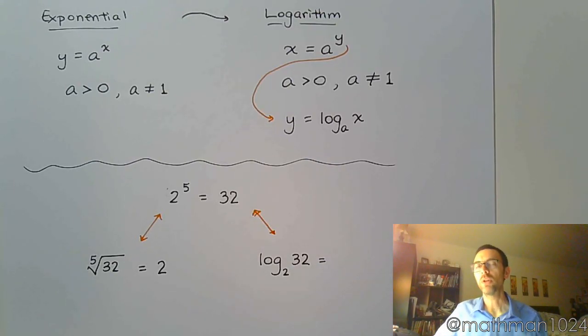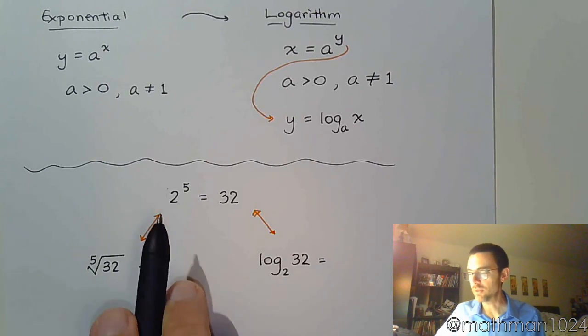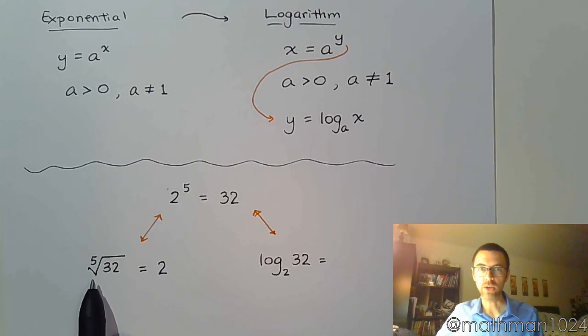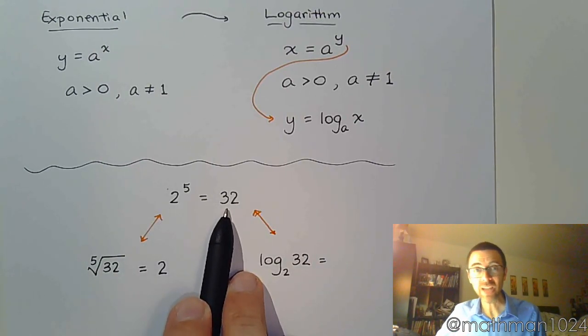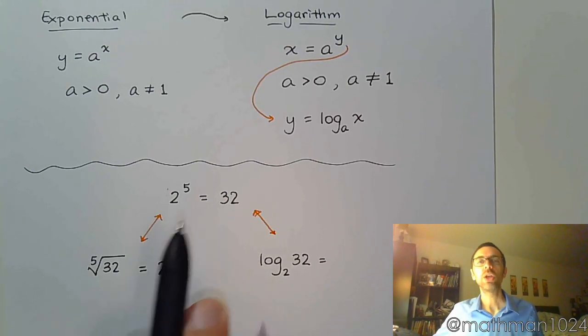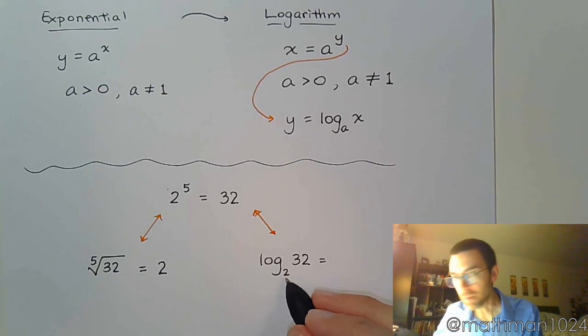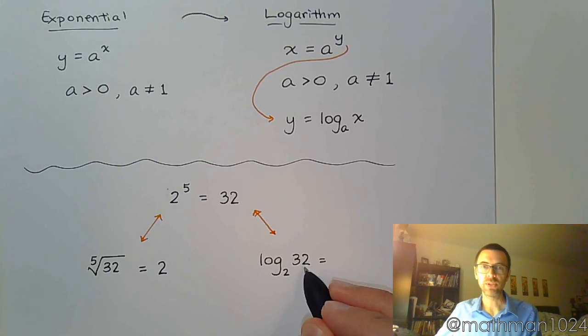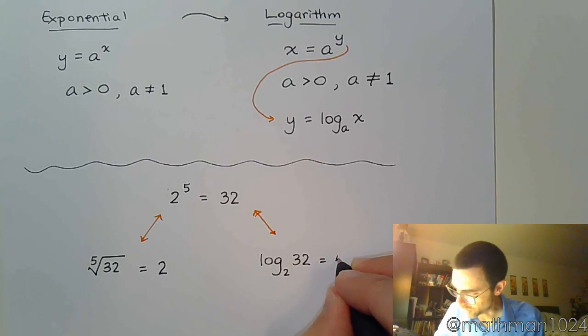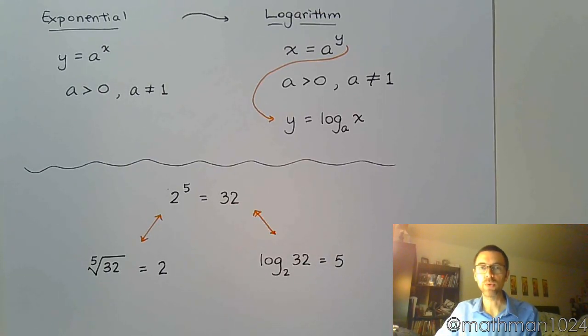So when you're dealing with a logarithm, you are not trying to find the base like you are with a radical. You're not trying to find the answer like you are when you're just evaluating with an exponent. You're trying to find the power. What's the power of 2 that gives us 32? And we already know the answer. The power is 5.